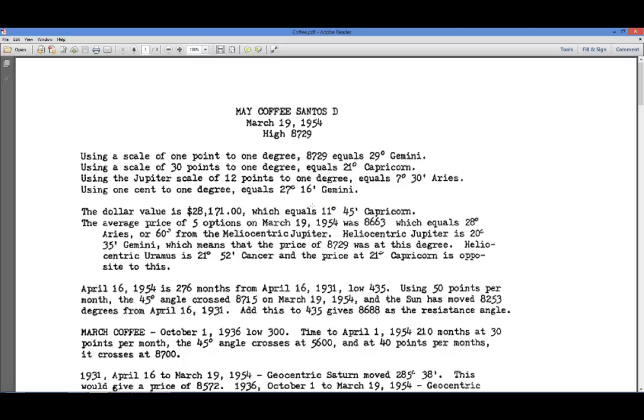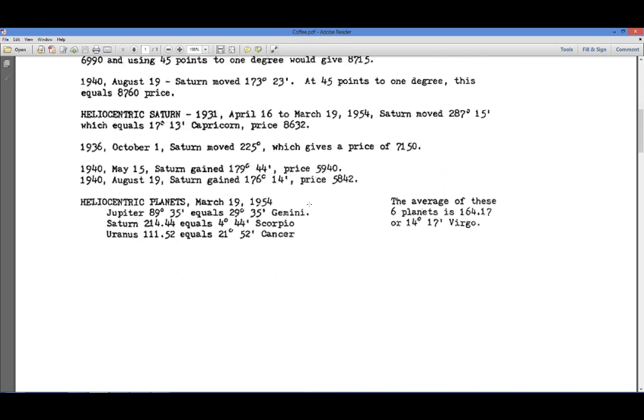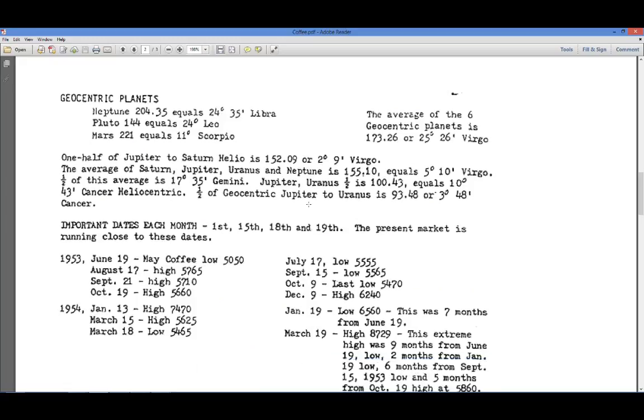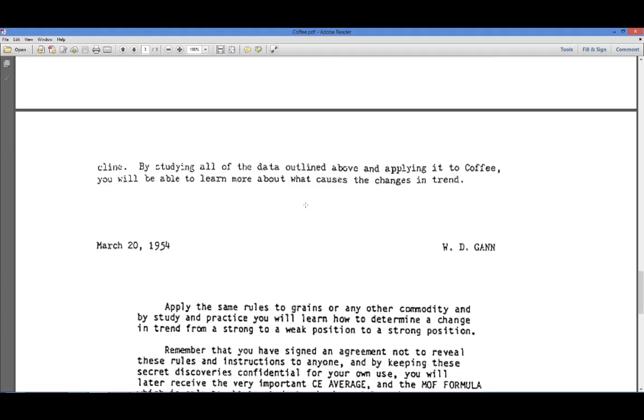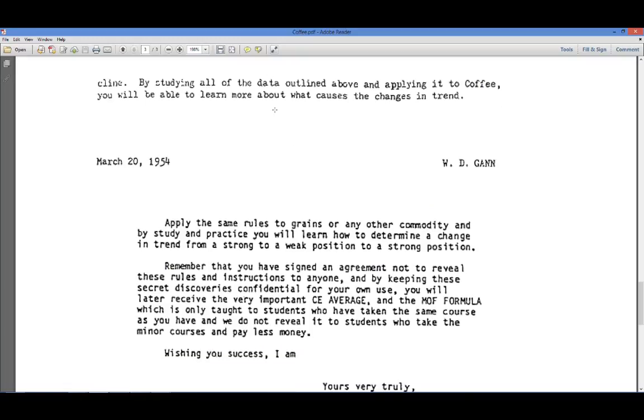Now what you're looking at is commonly known as the Gann coffee letter or May coffee letter. He's got a date up there, but that's actually for price. The day that he wrote this, and this by the way was also in Mr. Spawn's material, that's how he got it, was March 20, 1954. So you do the math on that. You're just shy of 28 years. Meaning that these two had known each other. They had been corresponding for almost 28 years.